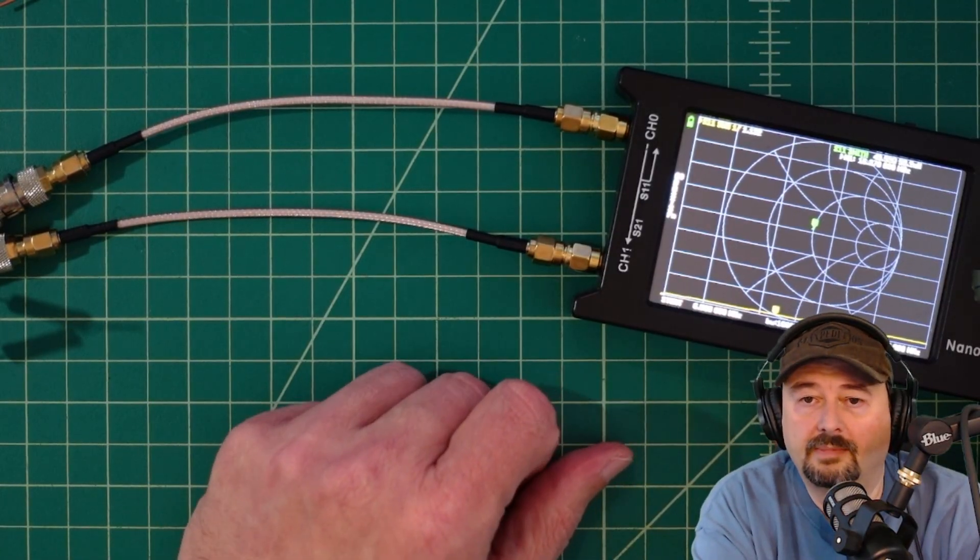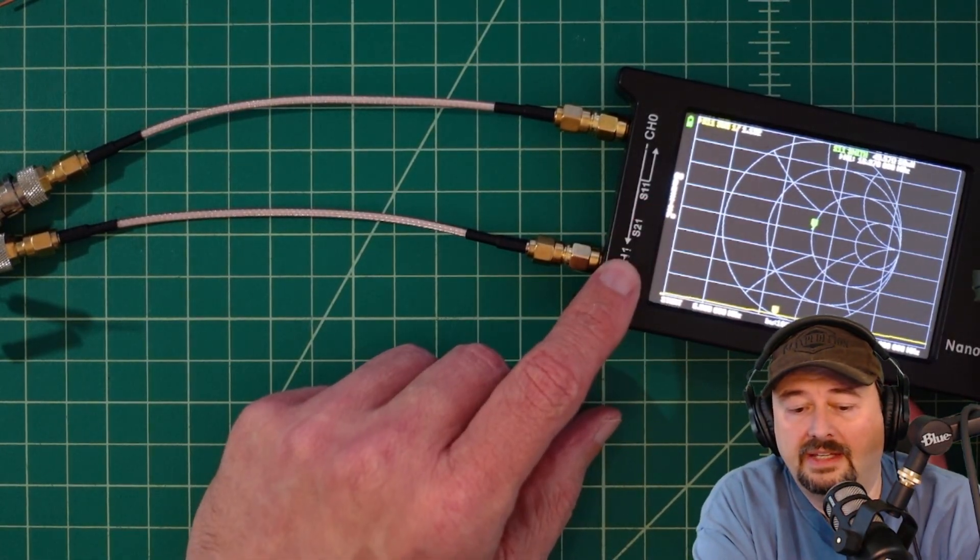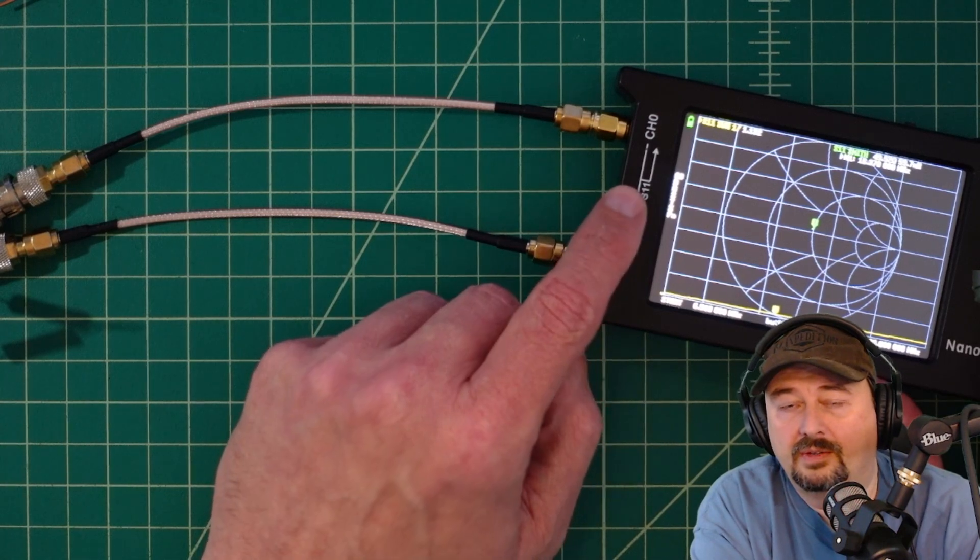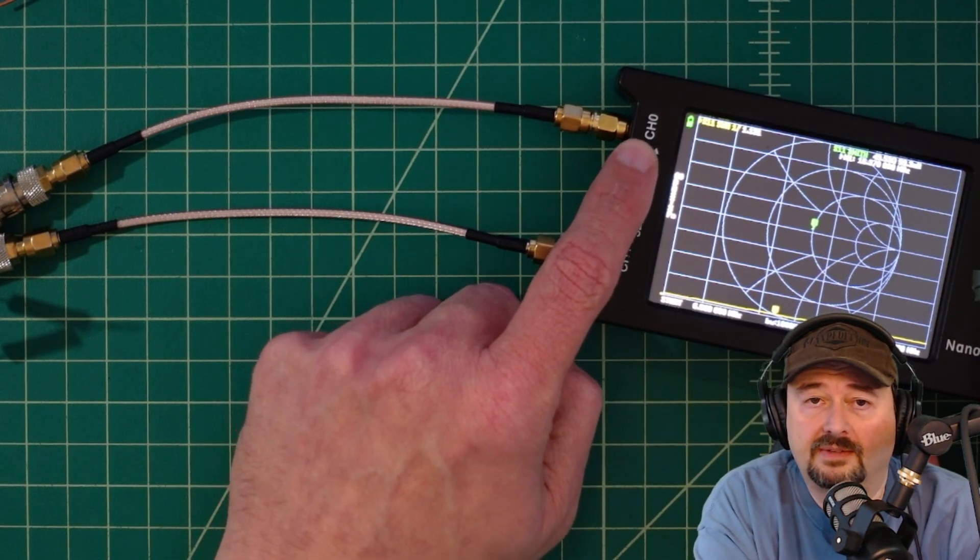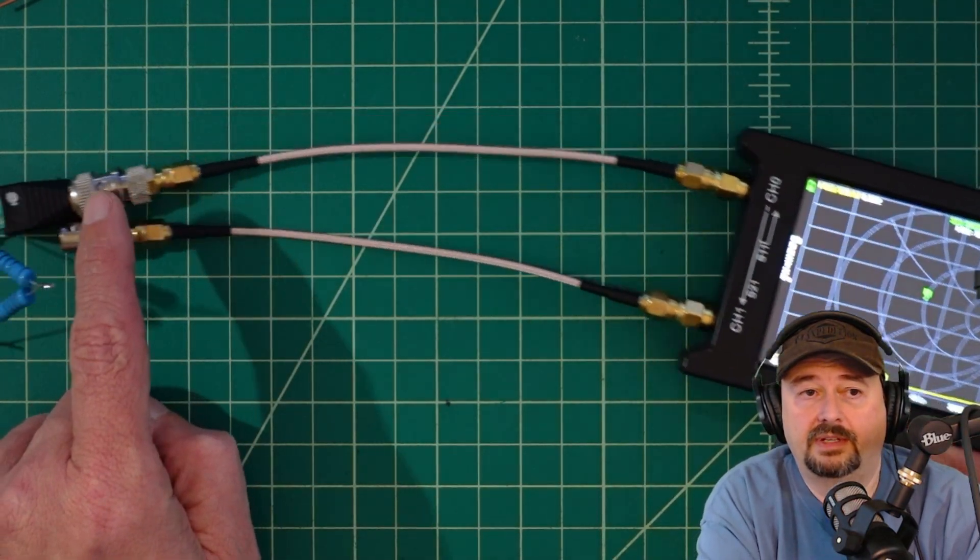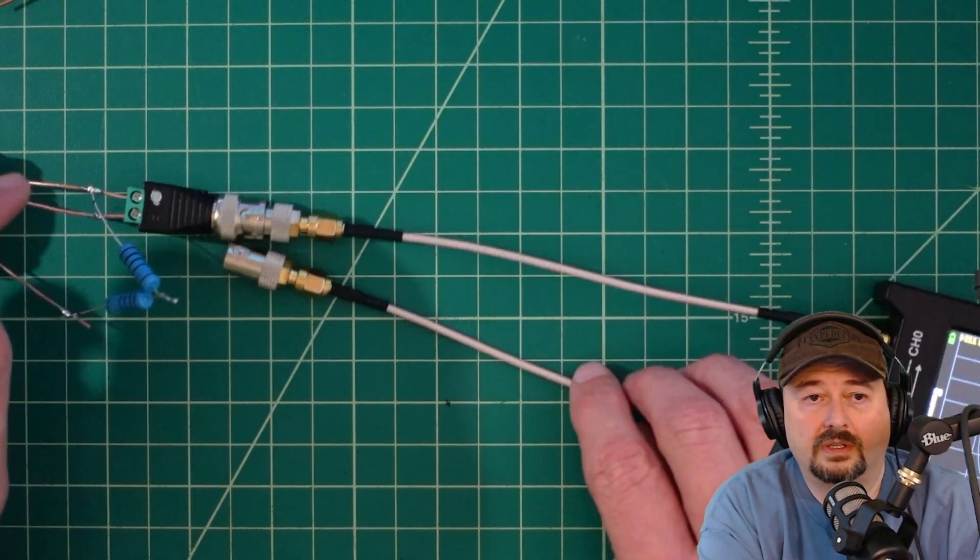Let's talk real quickly about the nanoVNA. We have a nanoVNA that's been calibrated and we are doing an S11 or reflection measurement. That means out of channel zero we're going to send a signal down and into our core.